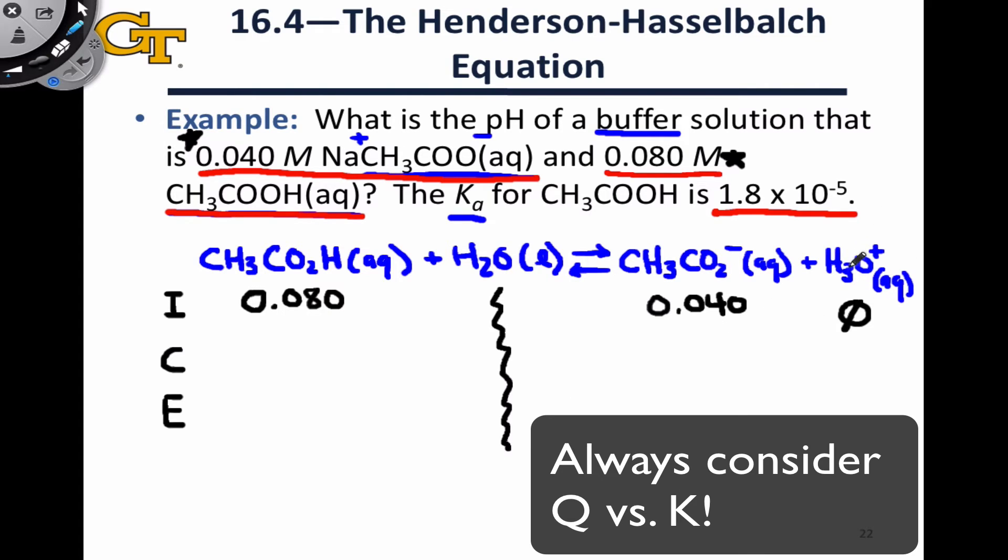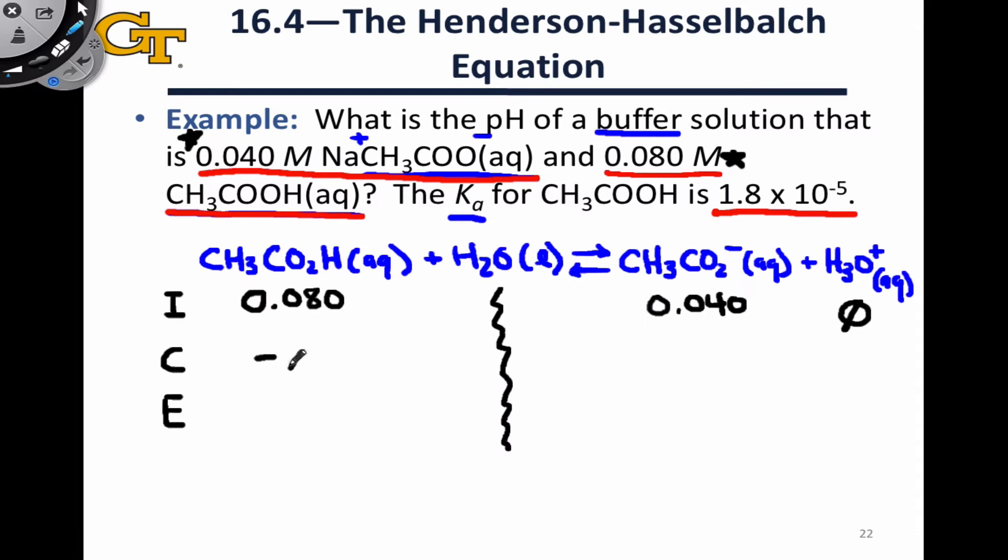Since we're starting with essentially no H3O+, we can assume that this process is going to go forward, meaning we're going to see a decrease in the concentration of acid, an increase in the concentration of conjugate base and hydronium, and we can write the equilibrium line as usual by summing the two, and go right to the equilibrium expression.